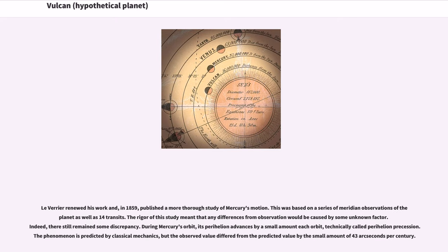Le Verrier renewed his work and, in 1859, published a more thorough study of Mercury's motion. This was based on a series of meridian observations of the planet as well as 14 transits. The rigor of this study meant that any differences from observation would be caused by some unknown factor. Indeed, there still remained some discrepancy.